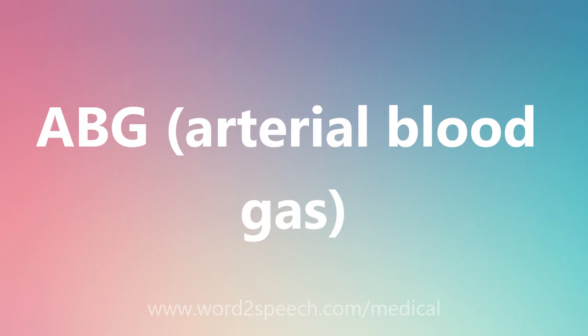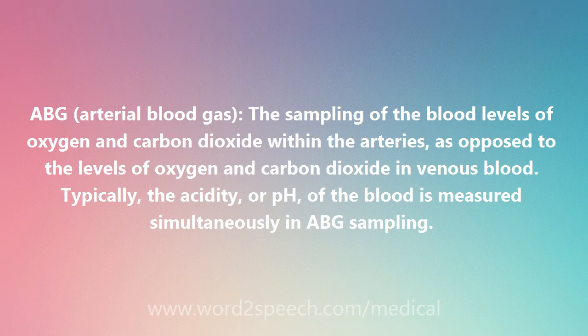ABG, arterial blood gas. The sampling of the blood levels of oxygen and carbon dioxide within the arteries, as opposed to the levels of oxygen and carbon dioxide in venous blood. Typically, the acidity, or pH, of the blood is measured simultaneously in ABG sampling.